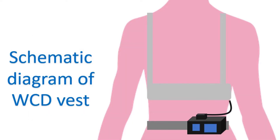The device is usually implanted below the left collar bone, and its electrical leads pass into the heart through the nearby blood vessel known as the subclavian vein. There is also a variety of ICD known as the purely subcutaneous ICD, which does not have a lead inside the heart. Instead, its lead is implanted under the skin of the chest itself.